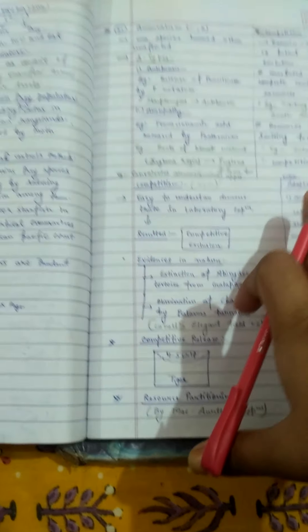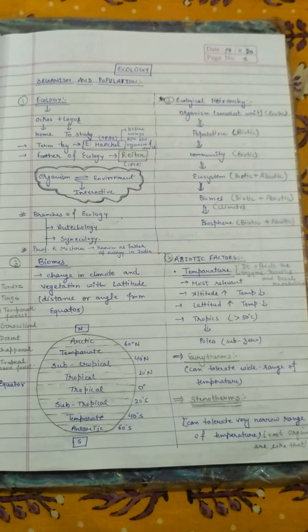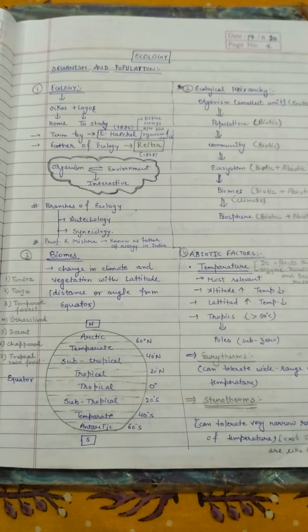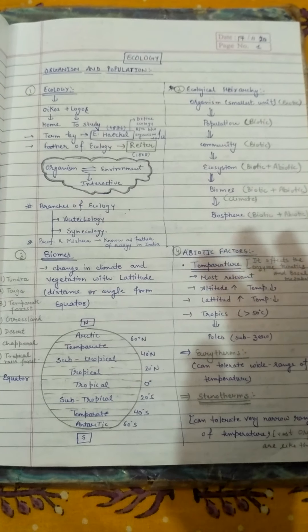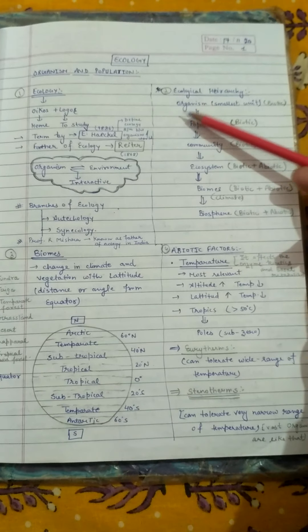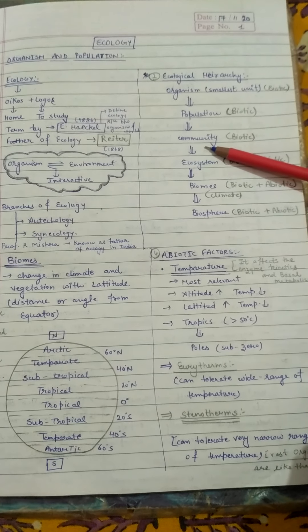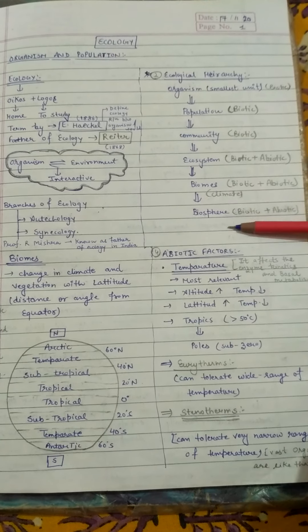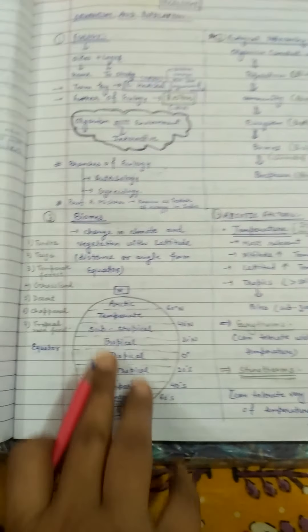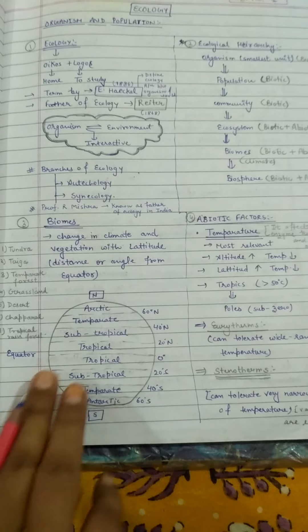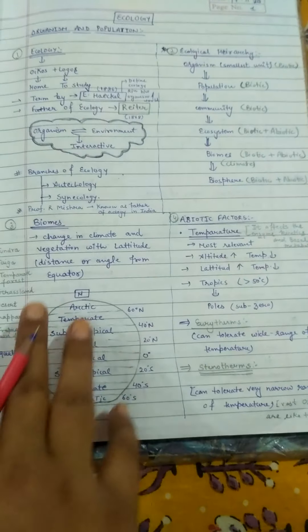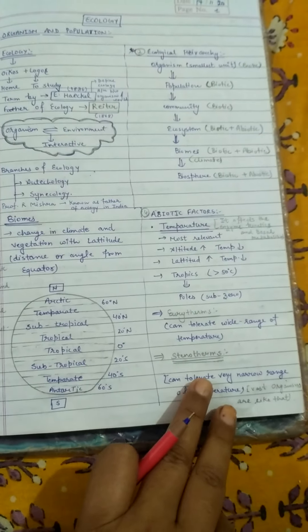Now let me give you a complete revision of everything we have studied in organism and population. Starting from the beginning, we have studied the ecology term, the ecological hierarchy — from the smallest to the largest species. In this chapter, we studied organism, population, and community interactions. We also studied major biomes and how climatic changes occur — how abiotic factors change with latitude from the tropical equator onward, and how species composition changes accordingly.